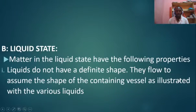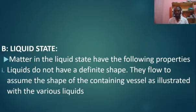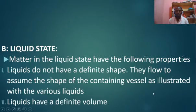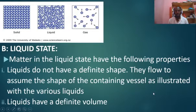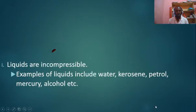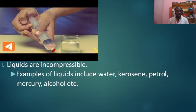In the liquid state, liquids do not have a definite shape — they will adopt the shape of the containing vessel. Liquids have a definite volume. We cannot compress liquid. Examples of liquids include water, kerosene, petrol, and mercury.